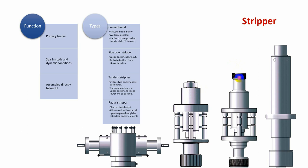With a tandem stripper, you always operate one while the other is retracted. If a leak occurs on the upper one, you close the lower one and repair the upper one.